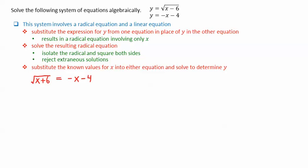From the first equation, y is equal to the square root of x minus 6. From the second equation, y equals negative x minus 4. We can then make these expressions equal to each other, giving us our radical equation. Note here that the square root is already isolated.